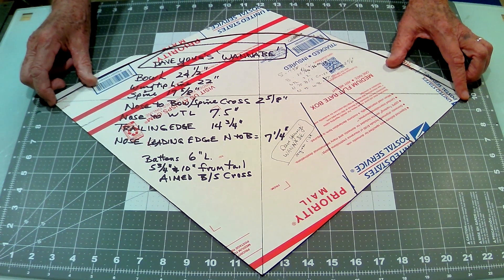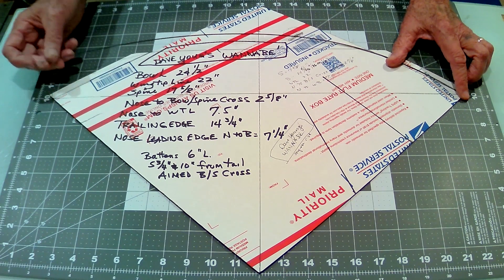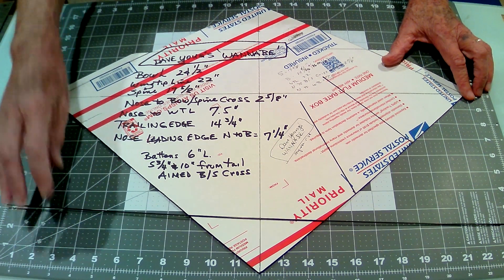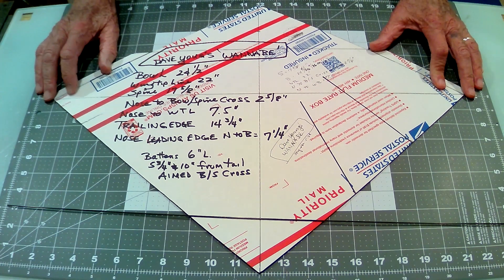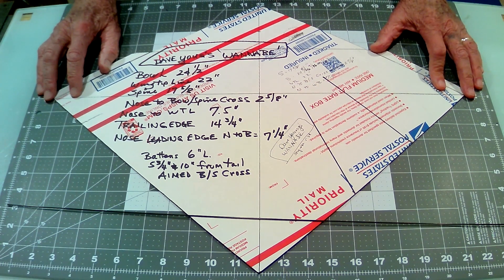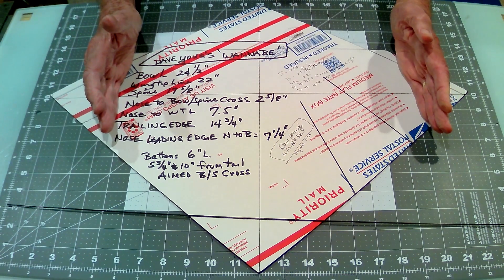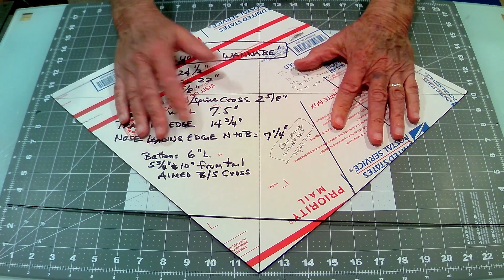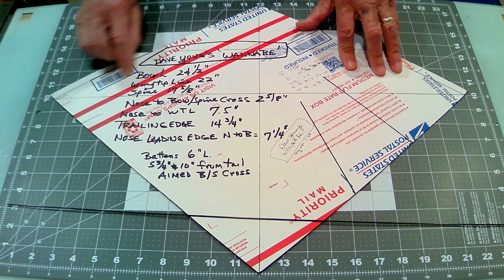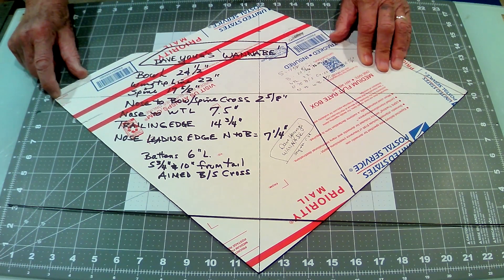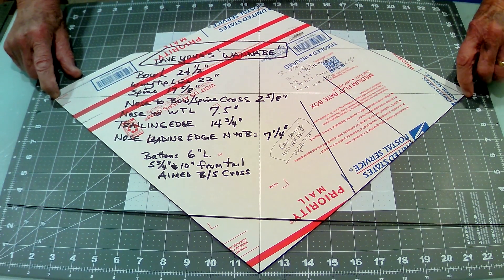Now, in other videos I've mentioned that having exact measurements of a kite is not as critical as having the exact dimensions on each side of the kite be the same. So, this is the wingtip line, 22 inches from here, one wingtip to the other, 22 inches.